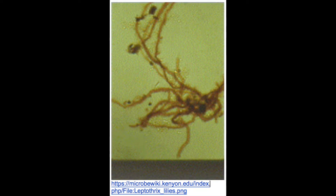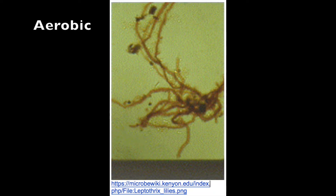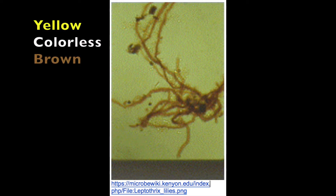Now that we know a little bit about its phylogeny and etymology, we can describe L. dyscophora as a microscopic, filamentous, or rod-shaped, aerobic bacterium. It may appear yellow, colorless, or dark brown, as seen in the photo here, based on the nature of the sheaths that surround it.